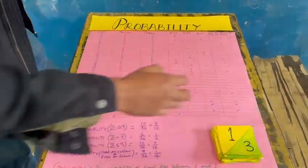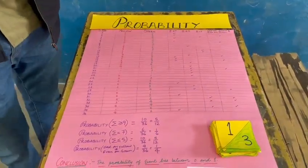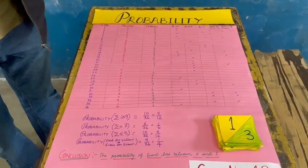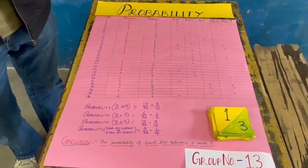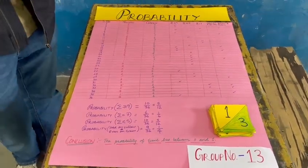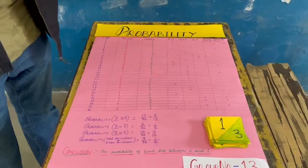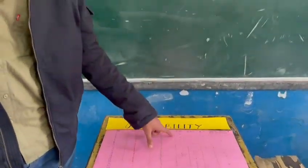There are total 36 outcomes and we will do the probability by taking one card at a time, one of these squares at a time, and record the probability in a tabular form.